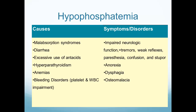Hypophosphatemia occurs primarily in situations where the patient is either not taking it in or is losing too much through the GI tract, so look for GI problems here. It's also possible in a hyperparathyroidism situation. Parathyroid hormone controls calcium release from the bone, so with hyperparathyroidism the patient releases too much calcium. Remember the inverse relationship between calcium and phosphorus: if calcium is high, phosphorus will be low.